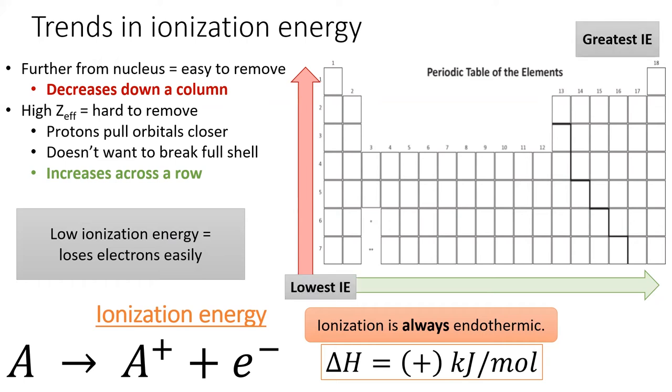So the elements with the highest ionization energies live in the upper right of the table. We call these elements non-metals. And the elements which lose electrons easiest have the lowest ionization energies and live in the lower left of the table. Those are the metals.